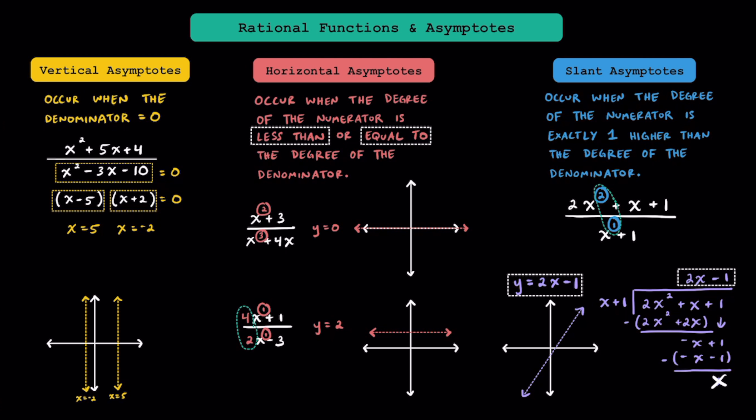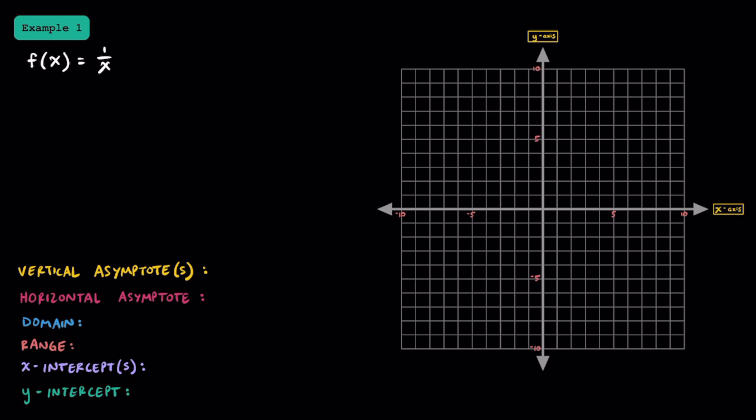Now that we've gone over the three types of asymptotes, let's do some math together. In example 1, let's start by looking at the function f(x) = 1 over x. This is our parent function for rational functions. I always recommend that you start by finding the vertical asymptotes first. Since our vertical asymptotes are always going to occur when the bottom is equal to 0, we pretty quickly find here that since x can't equal 0, that's where our vertical asymptote is. Asymptotes are just the locations where the graph actually can't be graphed.